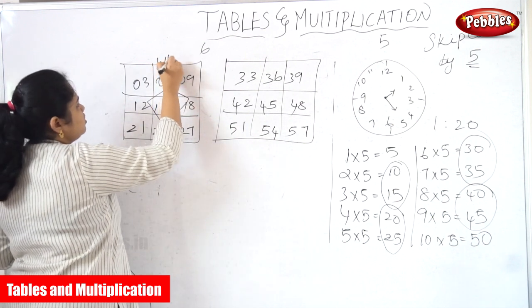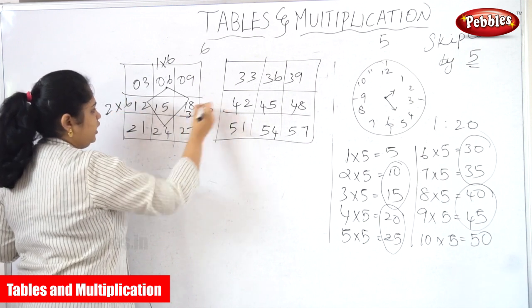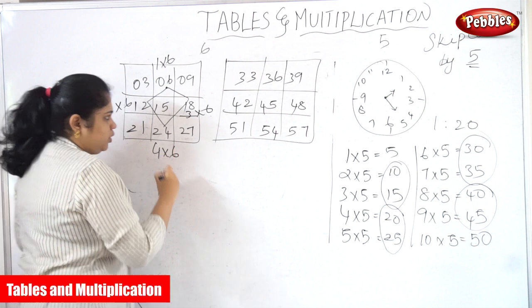See here, 1 into 6 is 6. 2 into 6 is 12. 3 into 6 is 18. 4 into 6 is 24.